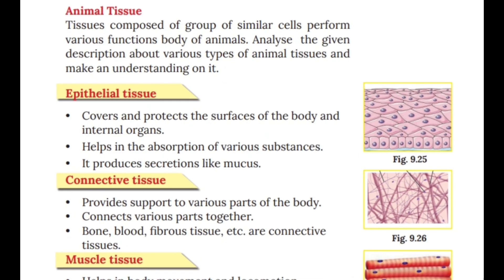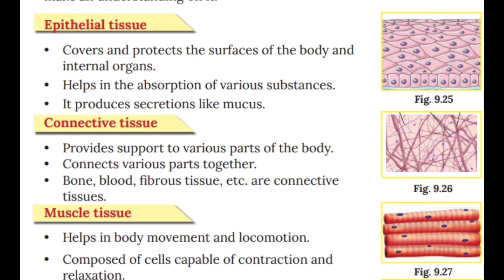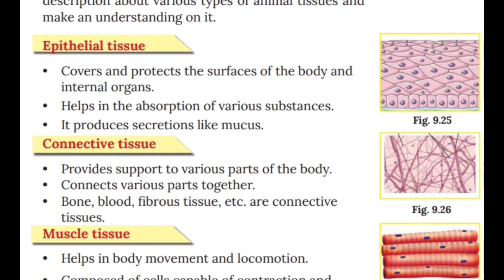Animal tissue: tissue composed of a group of similar cells that perform various functions of the body. Types include epithelial tissue, connective tissue, muscle tissue, and neural tissue. Epithelial tissue covers and protects the surface of the body and internal organs, helps in absorption of various substances, and produces secretions like mucus.